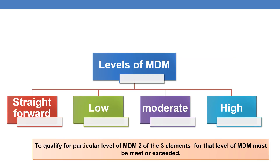Coming to levels of MDM, it can be straightforward, low, moderate, or high. An important point is: in order to qualify for a particular level of MDM, two of the three elements must be met or exceeded for that level of MDM.